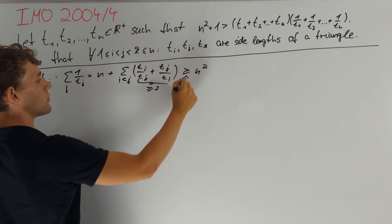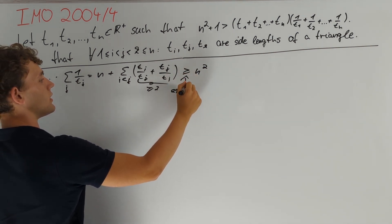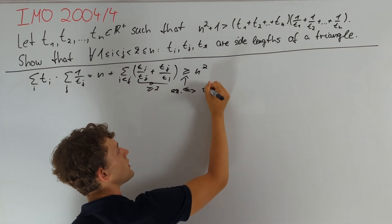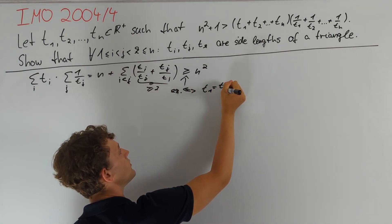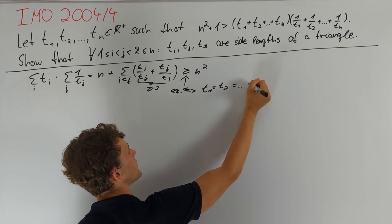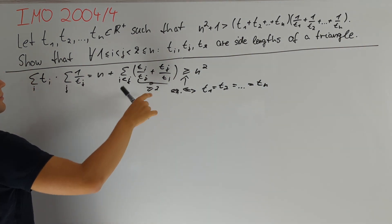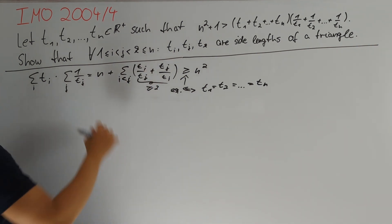Therefore, equality is equivalent to t₁ = t₂ = ... = tₙ, because AM-GM has equality if and only if those two terms are equal. Let's take a look at what we want to prove.